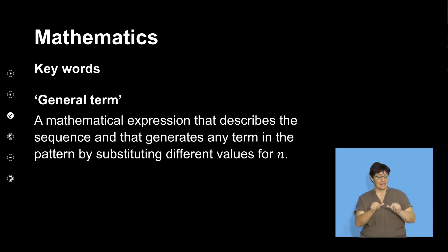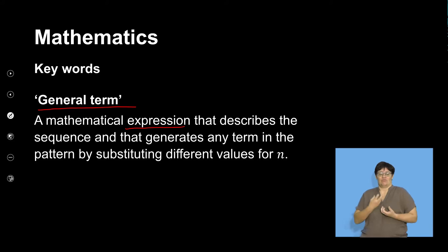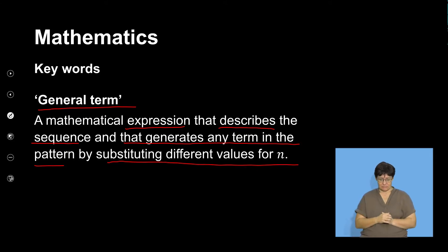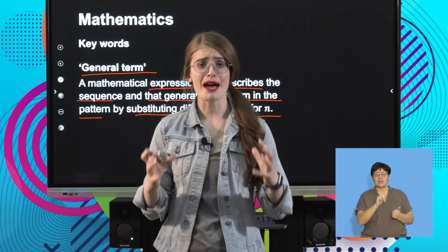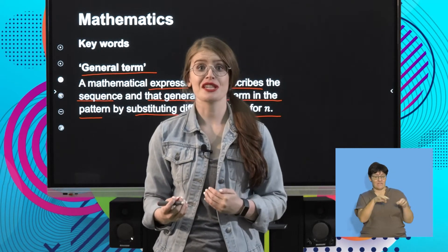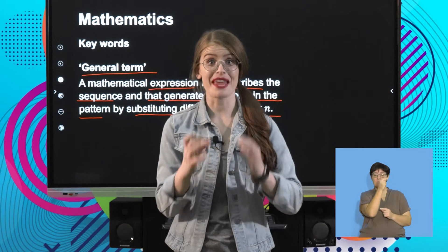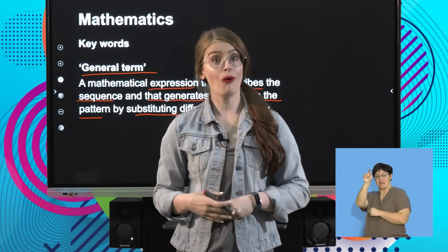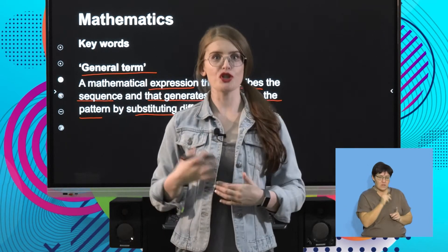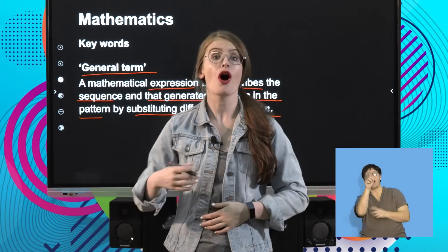The next definition is the general term. The general term is a mathematical expression that describes the sequence and generates any term in the pattern by substituting different values for n. This means the general term is a mathematical rule where I can substitute in n values. If I substitute in term numbers, I will be able to determine the actual value of that term. Alternatively, I could substitute in a term value to determine which term has a given value.